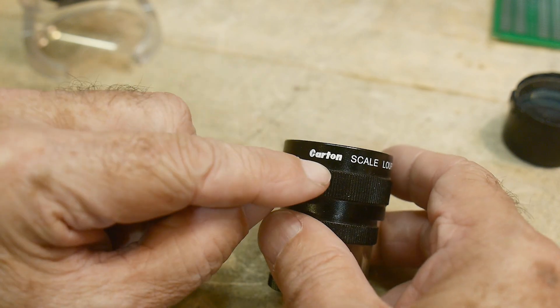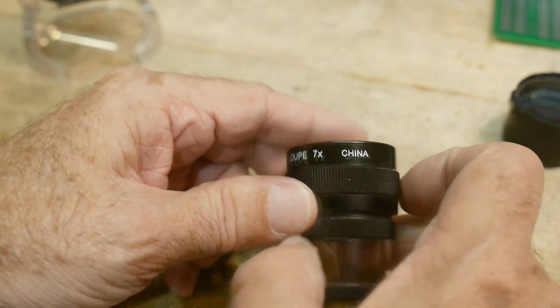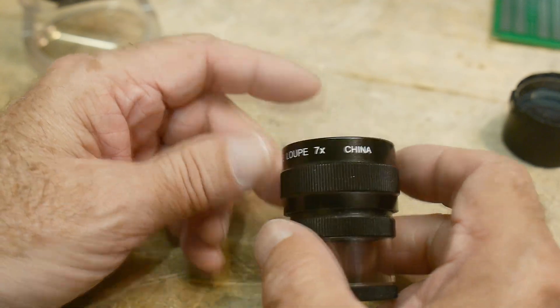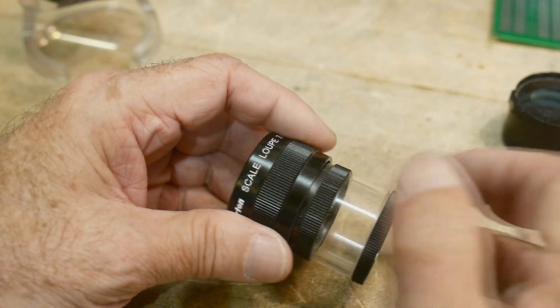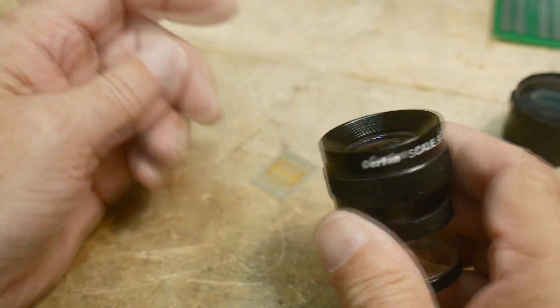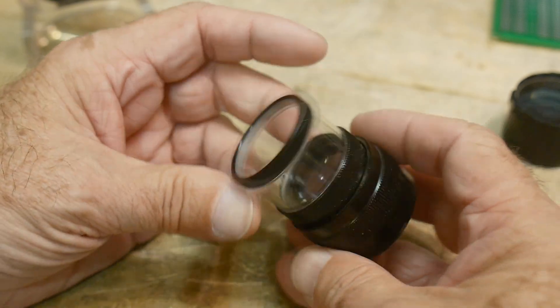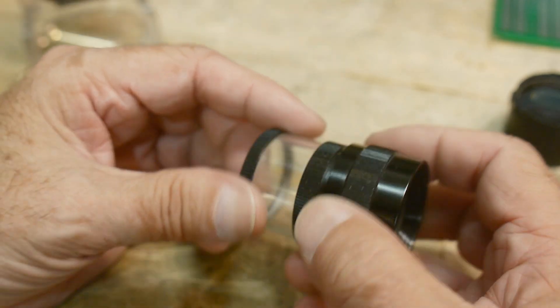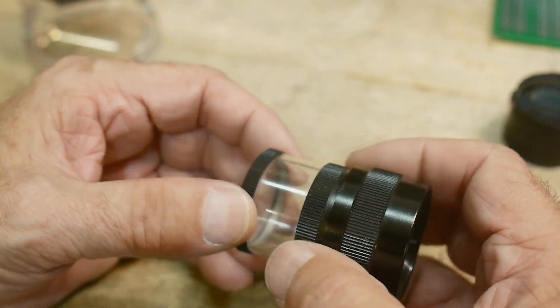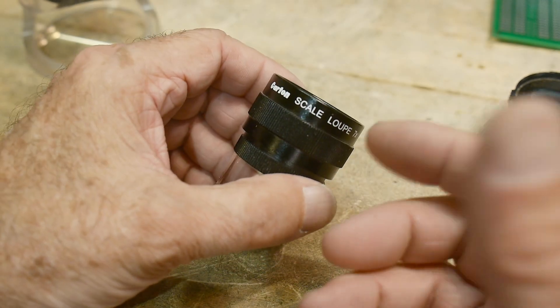So yeah, there you go. These things can be stupid expensive as well. This one is some Chinese brand, I think Carton scale loop 7x, made in China. One of the big brand names for these is Peak, P-E-A-K, made in Japan. They can be quite expensive, something like this might run you $50 to $75. You can get kits that have multiple reticles or scales, whatever you want to call them.